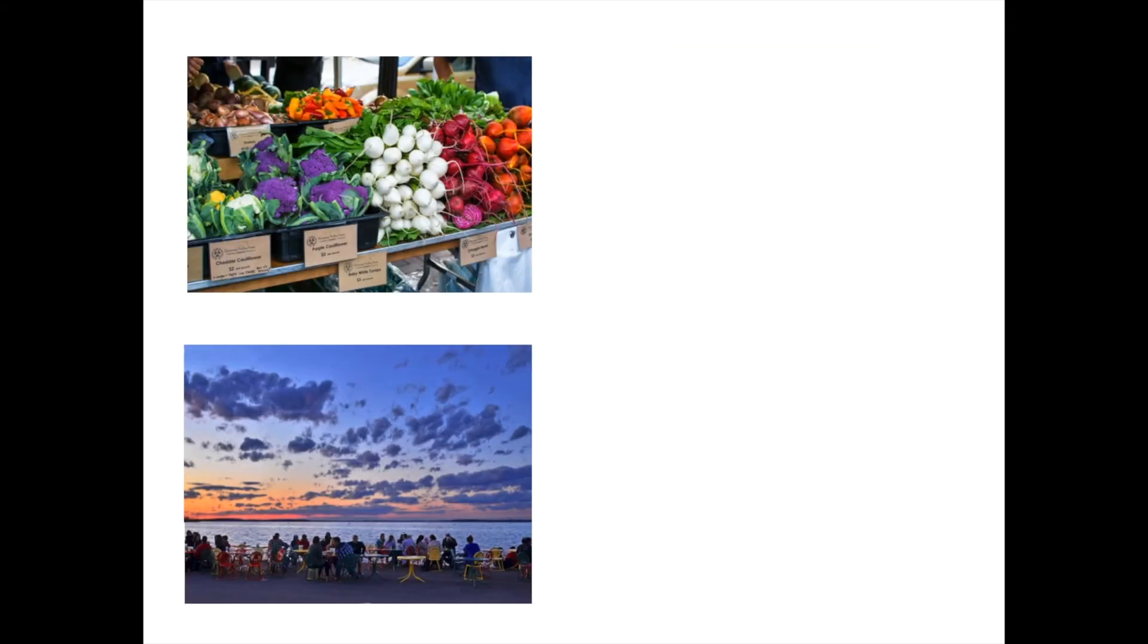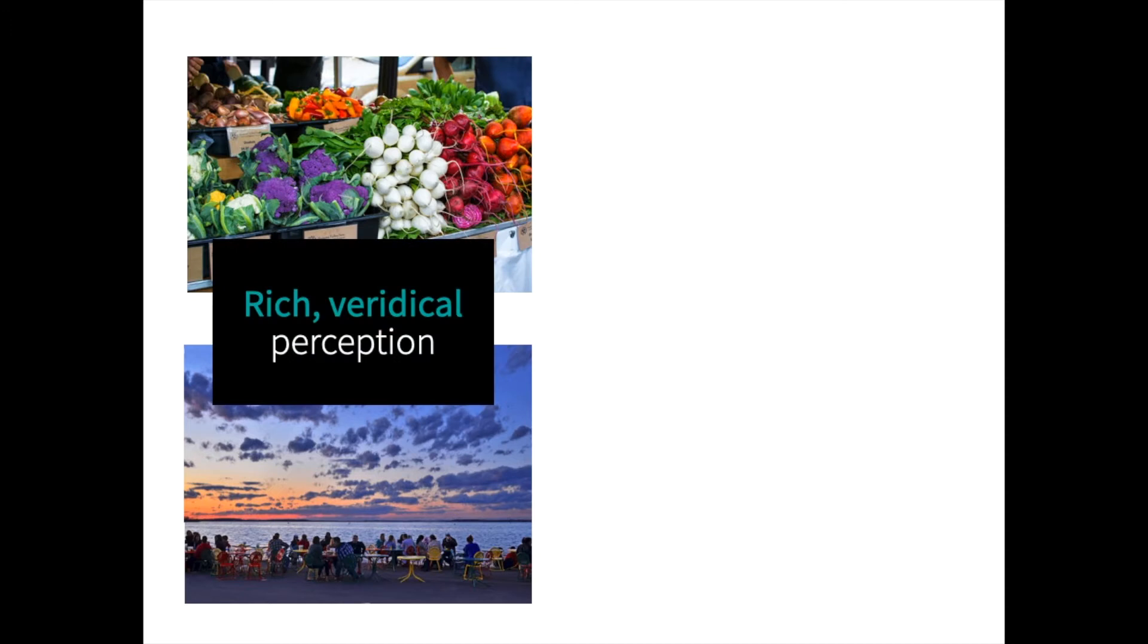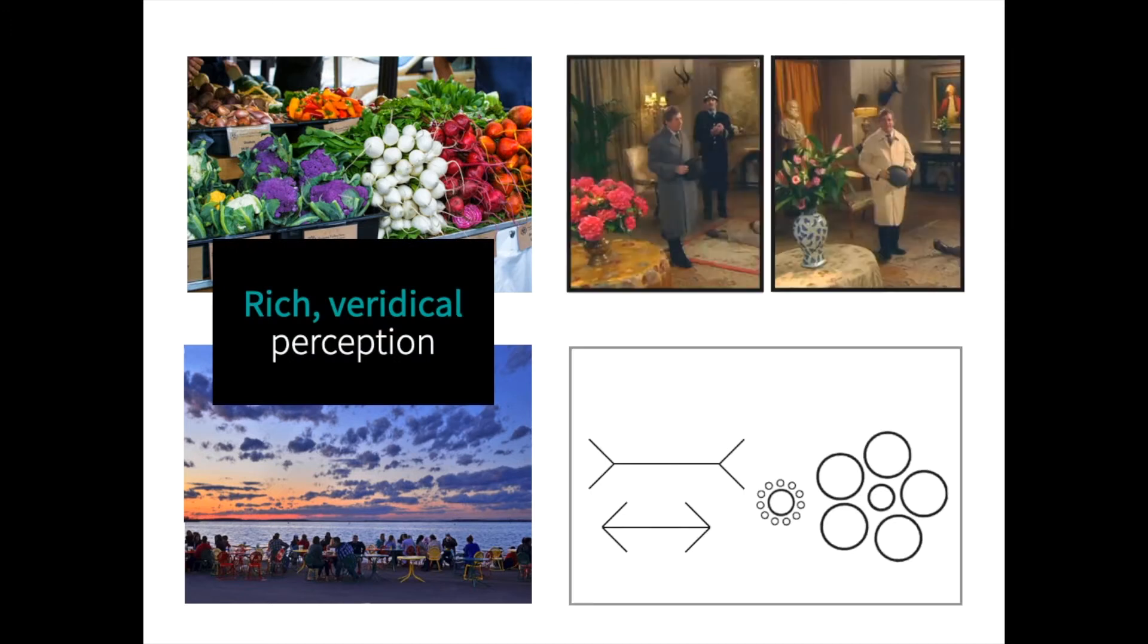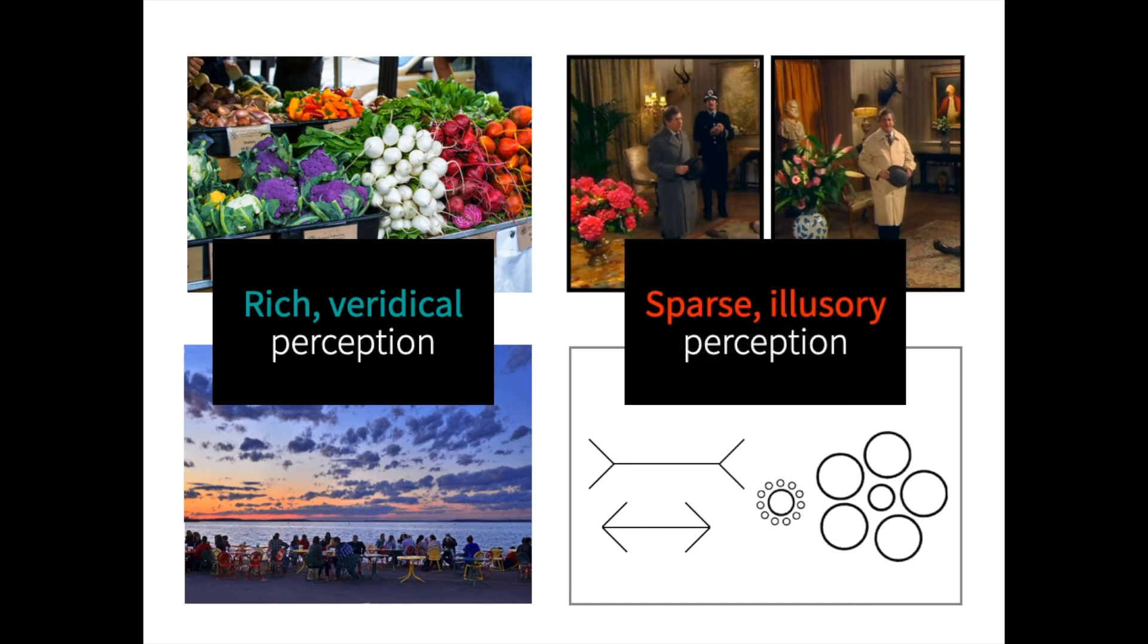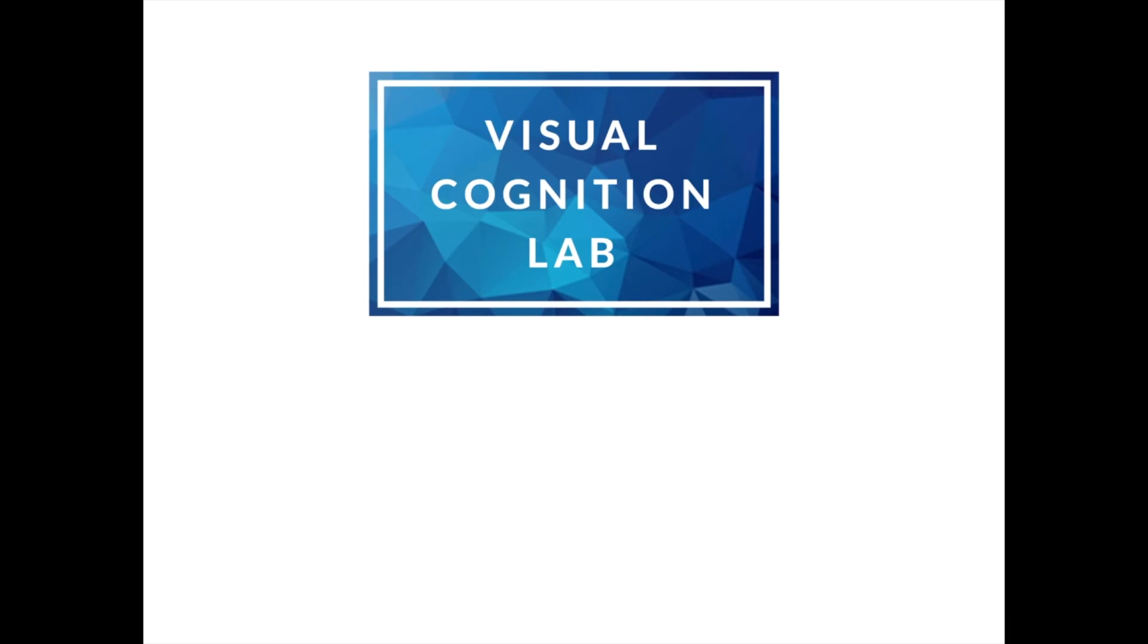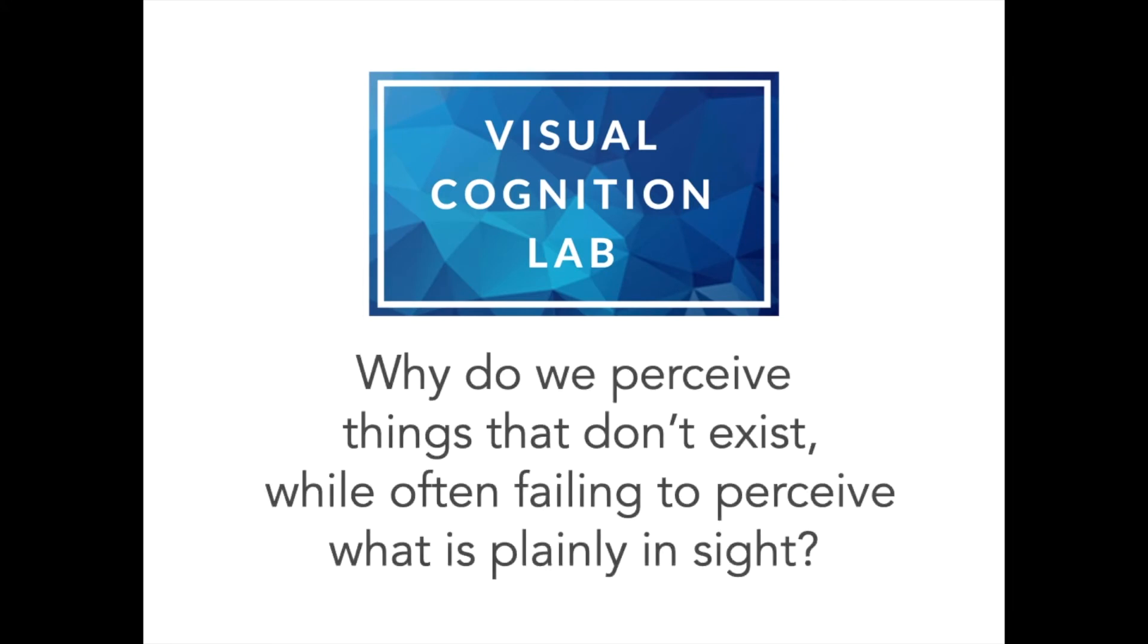So it's pretty interesting that on one hand, we have this very rich and detailed perception, while on the other hand, there's plenty of instances where our perception seems to be very sparse and illusory. My lab is really interested in this contradiction. Why do we perceive things that don't exist, while often failing to perceive what is plainly in sight?